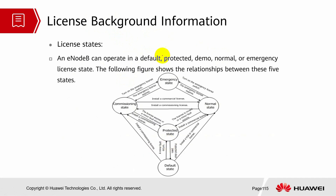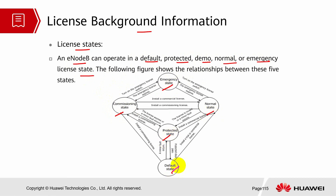What are the license background information — license states? An EOB can operate in default, protected, demo, normal, or emergency license state. The following figure shows the relationship between these five states. So we can be in a commissioning state, emergency state, normal state, protected state, or default state.